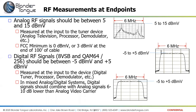For digital signals — including 8VSB (the off-air format) and QAM64 or QAM256 (the digital cable TV format) — levels should be between -5 dBmV and +5 dBmV at the receiver. In a mixed system with both analog and digital signals, the digital signals typically run 6 to 10 dB lower than the analog video carrier to prevent interference and ensure both signal types coexist cleanly.